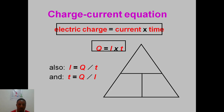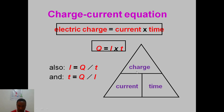You can fit these formulas into a triangle to make it easy to calculate any of the parameters. From I = Q/t, Q is the numerator so it goes at the top of the triangle; I and t multiply each other at the bottom. To find t, use t = Q/I; to find Q, use Q = I × t.